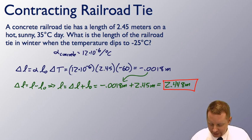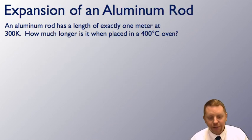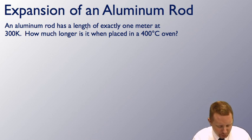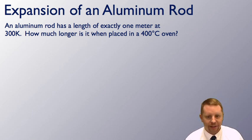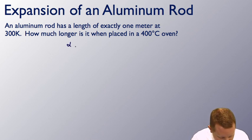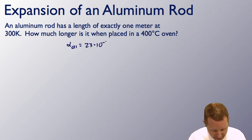Let's check out another one. Expansion of an aluminum rod. An aluminum rod has a length of exactly 1 meter at 300 K. How much longer is it when placed in a 400 degree Celsius oven? To do this again, let's look up the coefficient of linear expansion for aluminum. I find that the coefficient of expansion for aluminum is 23 times 10 to the minus 6 per degree Celsius.